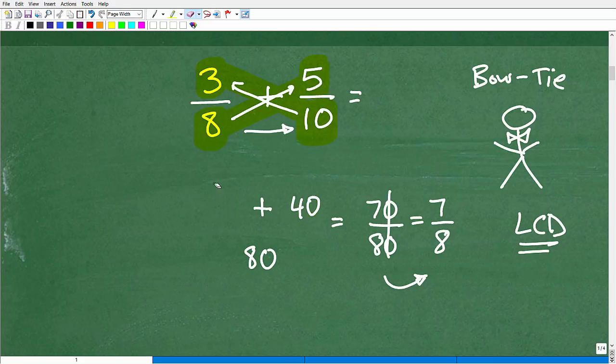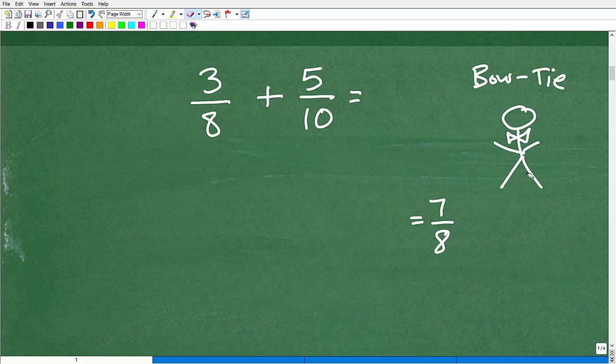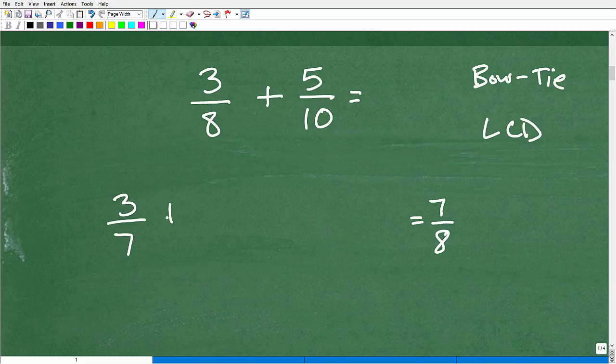So 7 eighths is the answer. Let's actually go ahead and do this with the lowest common denominator just as a quick review, right? Make this a little bit more interesting. So we know the answer, again, is 7 eighths. Now, why is it that we need to find the LCD? Well, you can't add fractions unless you have the same denominator.